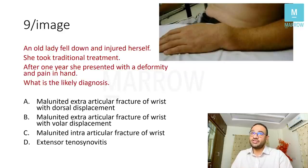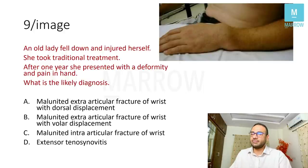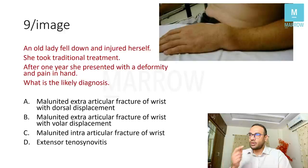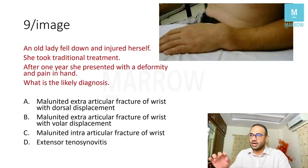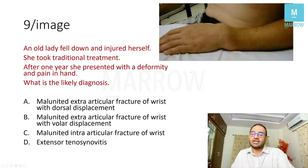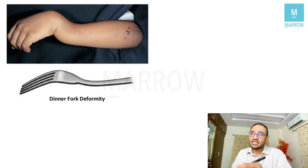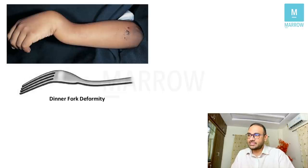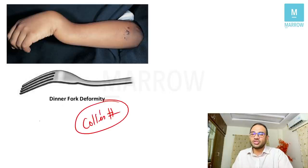Coming to this image-based question: an old lady fell down, took traditional treatment, and after one year presented with deformity and pain in hand. The image shows a classical dinner fork deformity. Dinner fork deformity occurs following Colles' fracture. The answer is malunited extraarticular fracture of the distal end of the wrist with dorsal displacement.